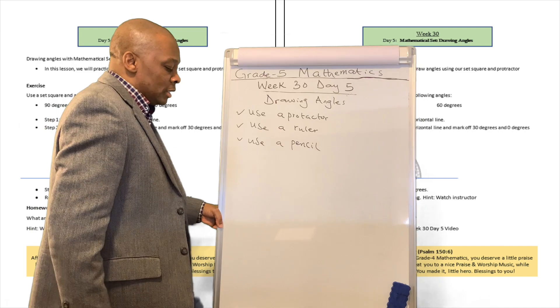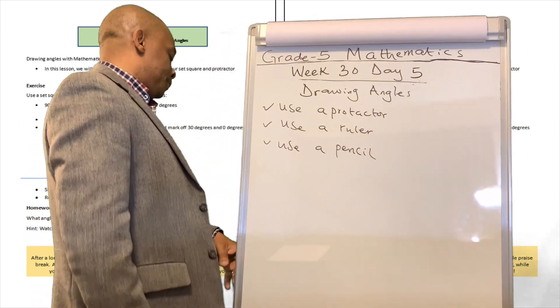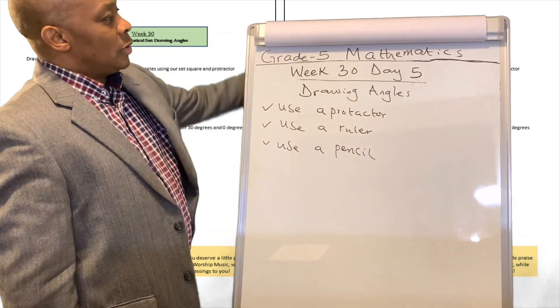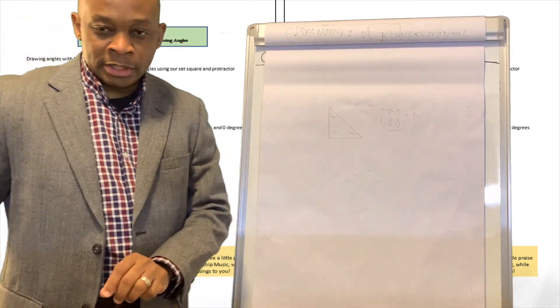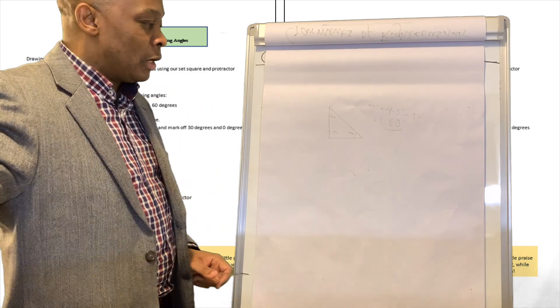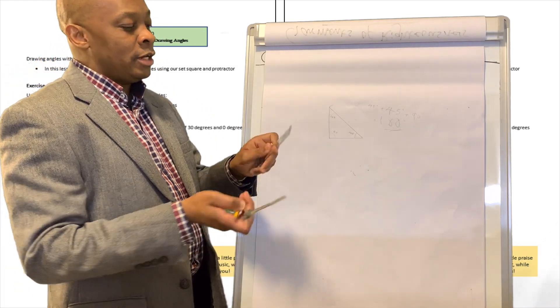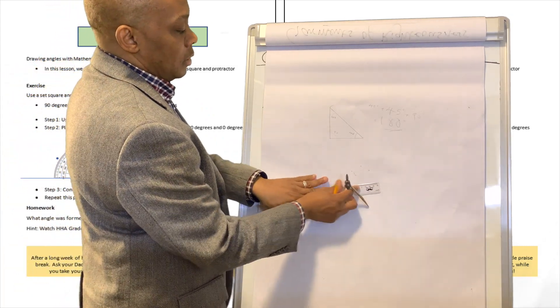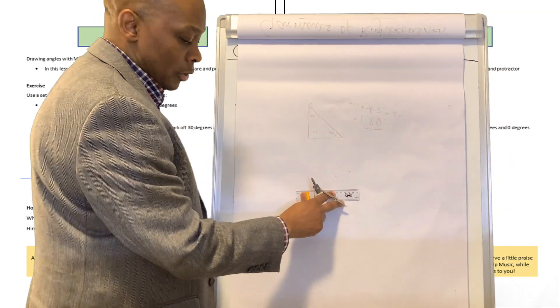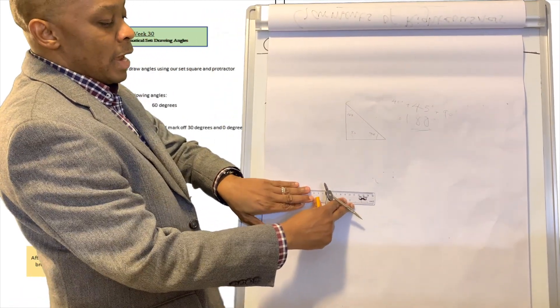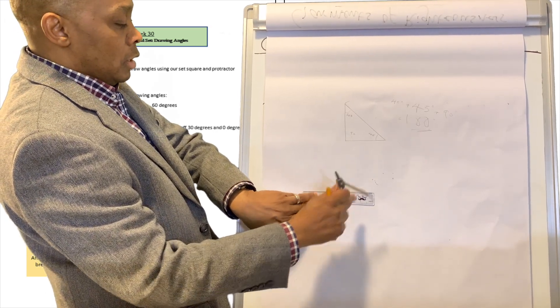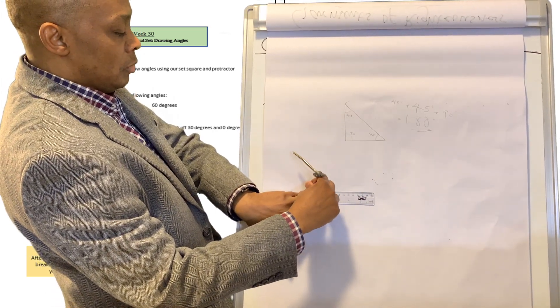So we're going to draw a 60 degrees angle. Let's go to our flip chart. We're going to draw a 60 degrees angle right now. So let's go ahead and draw a straight line to start with. Just draw a line with your ruler. I'm going to move it real close so you can see it. So we're going to draw a line here with our pencil and ruler.